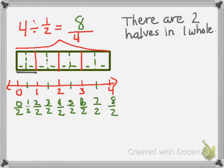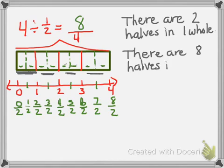So you could do it 2 ways. You can count it. 1, 2, 3, 4, 5, 6, 7, 8. Or if you know that there's 2 in 1, you can count by 2s. 2, 4, 6, 8. So I can say, there are 8 halves in 4 wholes.